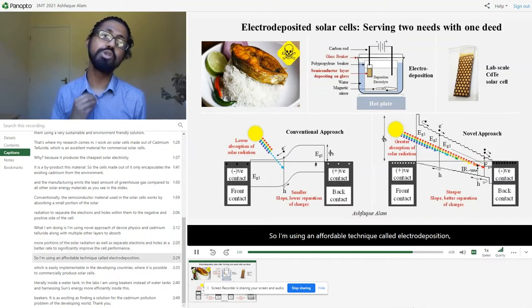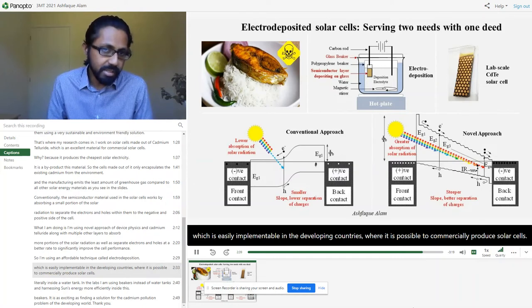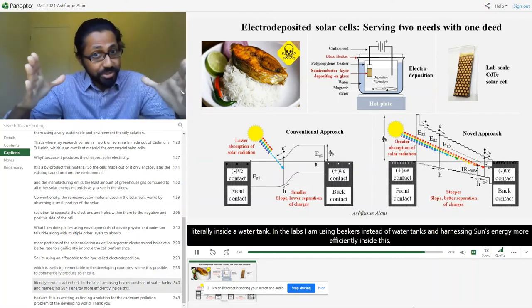To do so, I am using an affordable technique called electrodeposition, which is easily implementable in the developing countries, where it is possible to commercially produce solar cells literally inside a water tank.